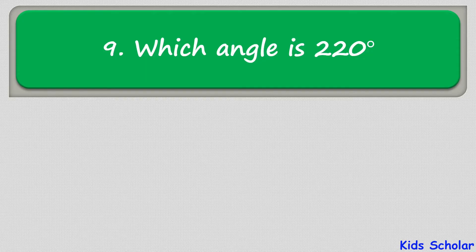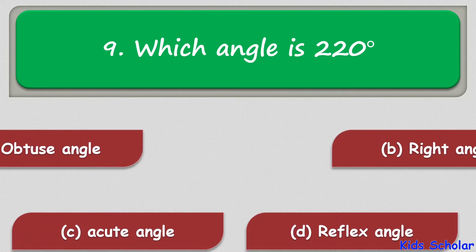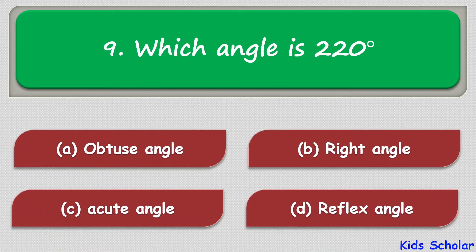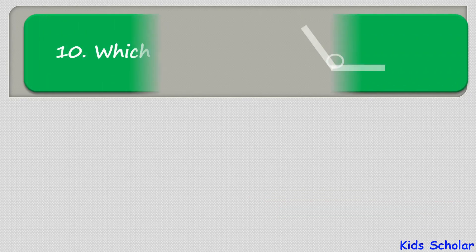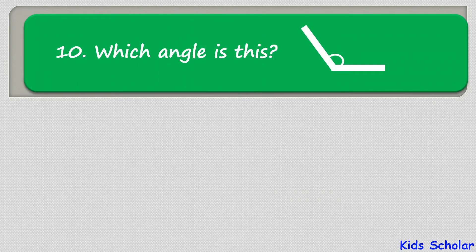The next question is: which type of angle is 220 degrees? The options are obtuse angle, right angle, acute angle, and reflex angle. The correct answer is reflex angle.